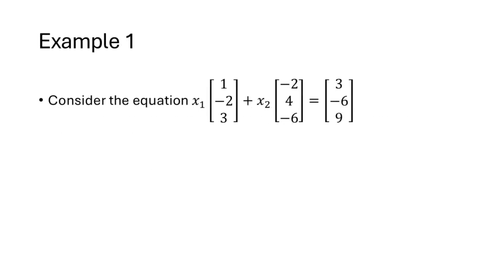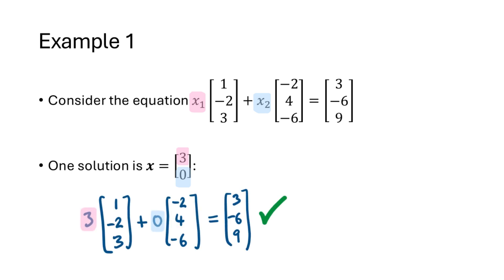For example, consider this vector equation. When we say that 3, 0 is a solution of this vector equation, what we mean is that 3 is a value for x1 and 0 is a value for x2 that makes the left-hand side equal the right-hand side. We can plug those values in, do the calculation, and check that this is correct.